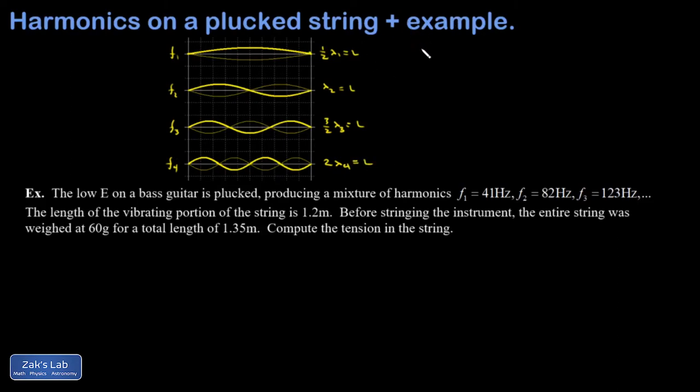We then solved for lambda n in general and found that it is 2l over n. We applied the wave speed equation, v equals f lambda, to solve for the nth resonant frequency and found that it was given by vn over 2l. And finally, we plugged in n equals 1 and said f1 is v over 2l, so then I could replace v over 2l with f1. And we found that every resonant frequency was an integer multiple of the fundamental, that first one.